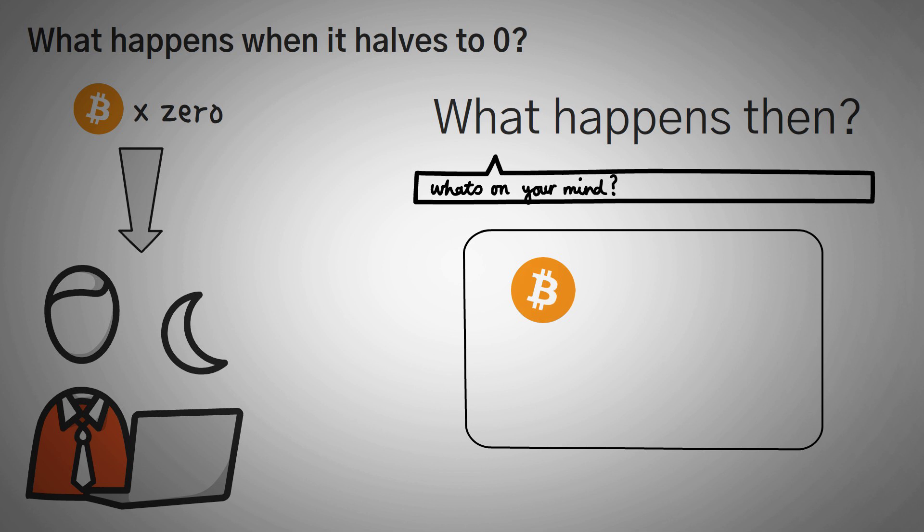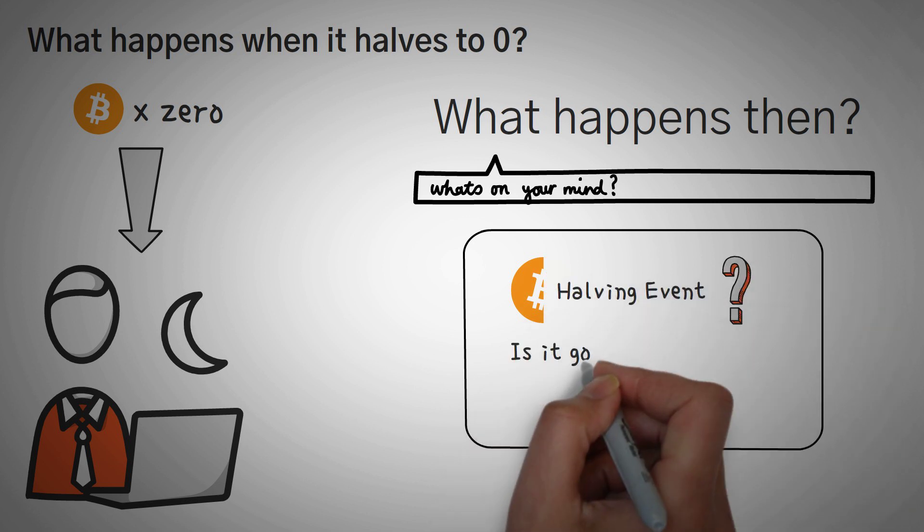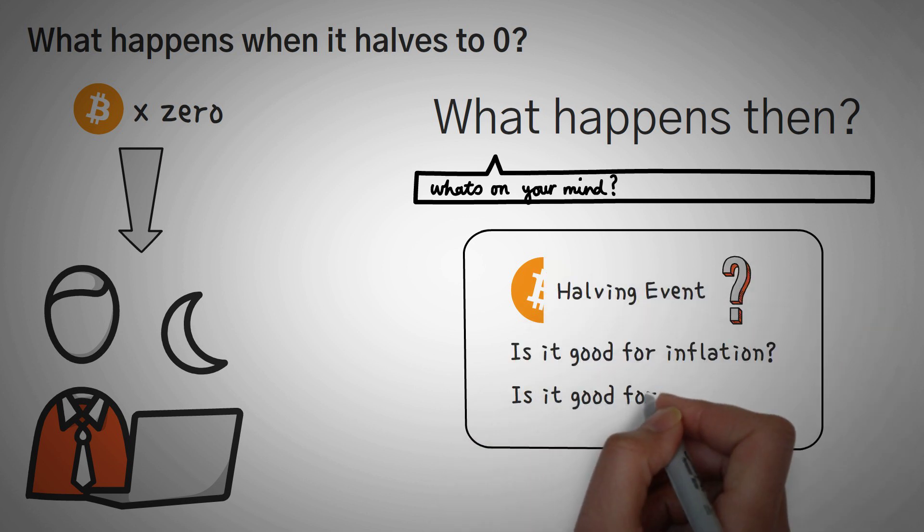So now it's your turn. What do you think of this halving idea? Is it good for inflation? Is it good for the miners? Do you think it should be increased or decreased? Was Thanos right snapping half the population away? We'd love to know your opinions below.